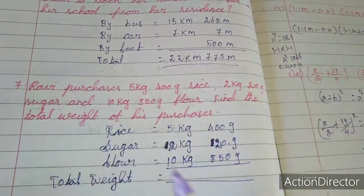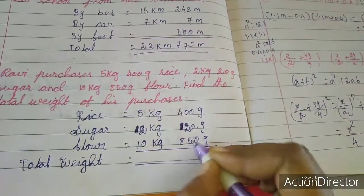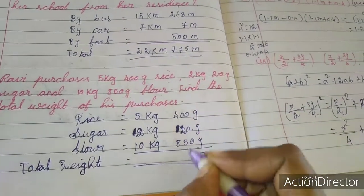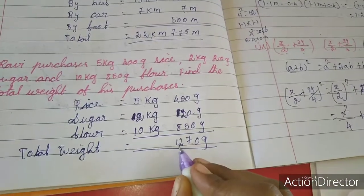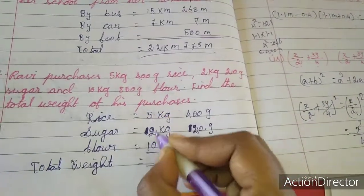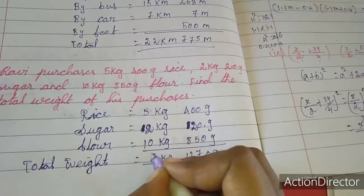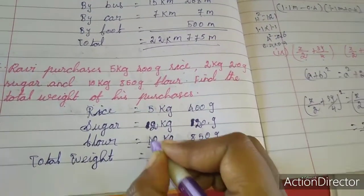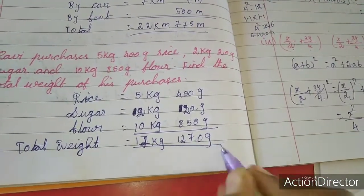To find the total weight of his purchases, add the grams. So 0, 2 plus 5 is 7, 4 plus 8 is 12, so 1270 g here. 5 plus 2 is 7, 10 plus 0 is 10. 2 plus 1 is 3, so 17 kg 1270 g.